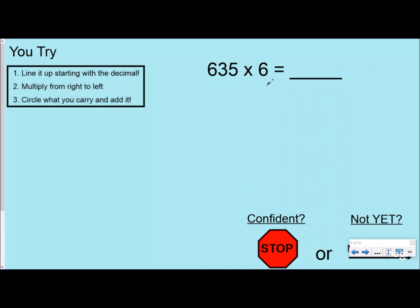So here I have 635 times six. And so I'm going to line it up, and you're going to try it first, so pause the video and try it. When you get done with that, after I go over it, if you got it right and you feel 100% confident, you can go ahead and stop the video. Or if you don't have it yet, you can have more practice. Now notice I said not yet. I didn't say you didn't get it. I just said not yet. We want to have a growth mindset, and you can keep watching for our next practice problem. So pause the video, and then I'll go ahead and solve it.